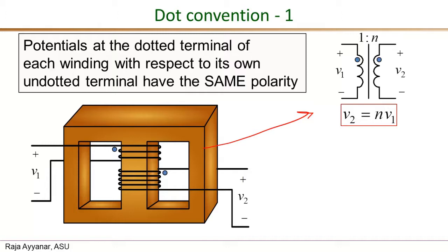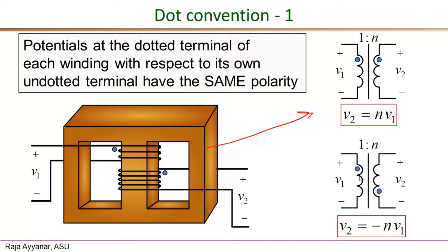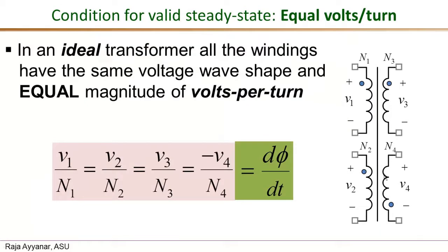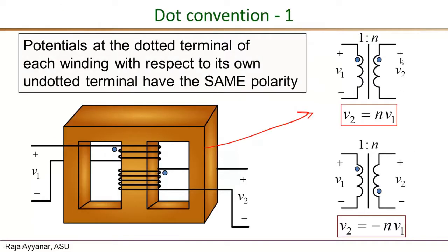Considering the turns ratio n, we can say V2 is positive n times V1. For a different case, if the transformer secondary is wound with a different sense of direction, then given the corresponding dot representation, whenever V1 is positive, V2 with the same polarity assignment would be negative. Therefore, V2 is negative n times V1 for that dot configuration.